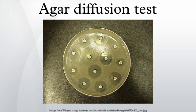The bacteria in question is swabbed uniformly across a culture plate. A filter paper disc, impregnated with the compound to be tested, is then placed on the surface of the agar. The compound diffuses from the filter paper into the agar. The concentration of the compound will be highest next to the disc, and will decrease as distance from the disc increases.